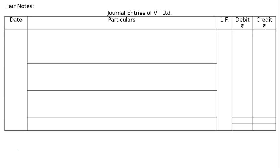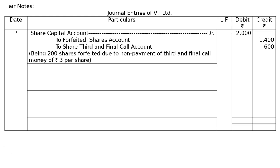Journal entries in the books of VT Ltd. Entry 1 — Forfeiture: Share Capital Account debited 200 × ₹10 fully called up = ₹2000. To Forfeited Shares Account: 200 × ₹7 = ₹1400. To Share Third and Final Call Account: Mohan failed to pay the final call of ₹3 per share, 200 × ₹3 = ₹600. Narration: 200 shares forfeited due to non-payment of third and final call money of ₹3 per share.